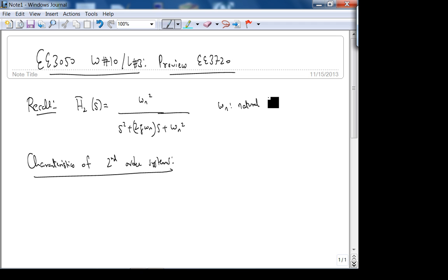There were some characteristics of second-order systems. Omega n recall is called the natural frequency. The units are radians per second, and zeta is the damping ratio and it's dimensionless.